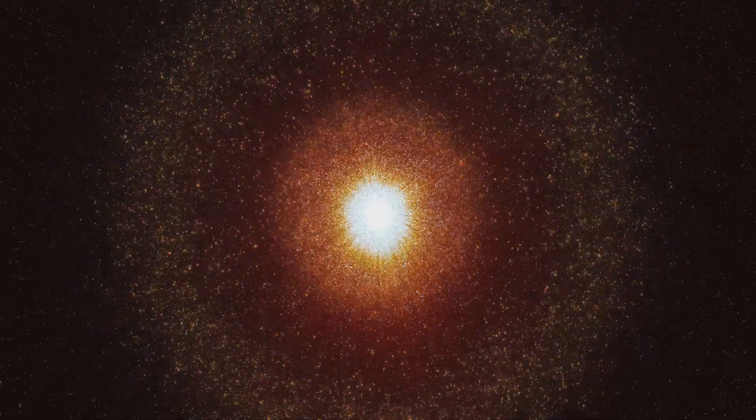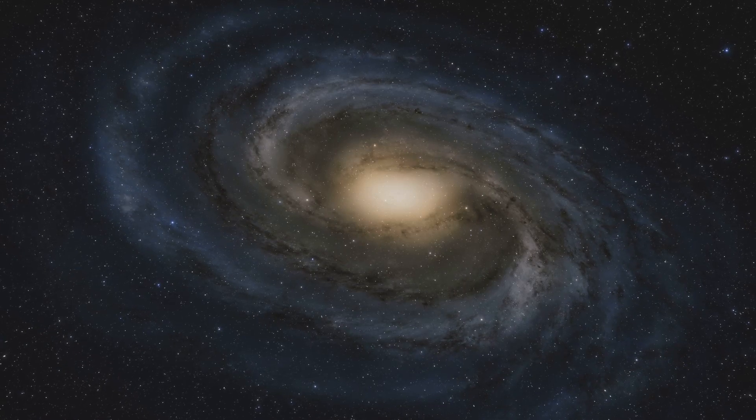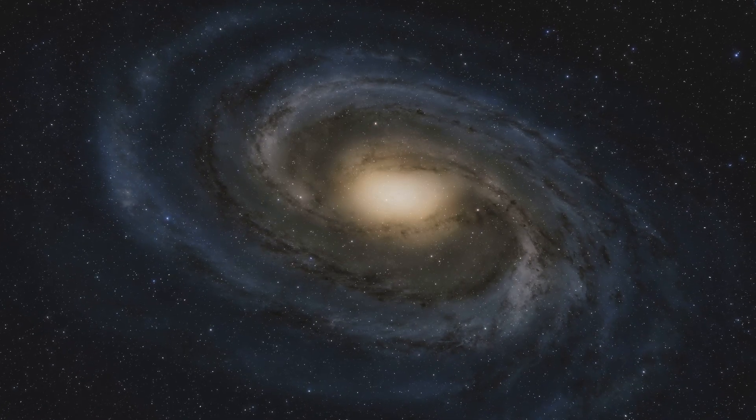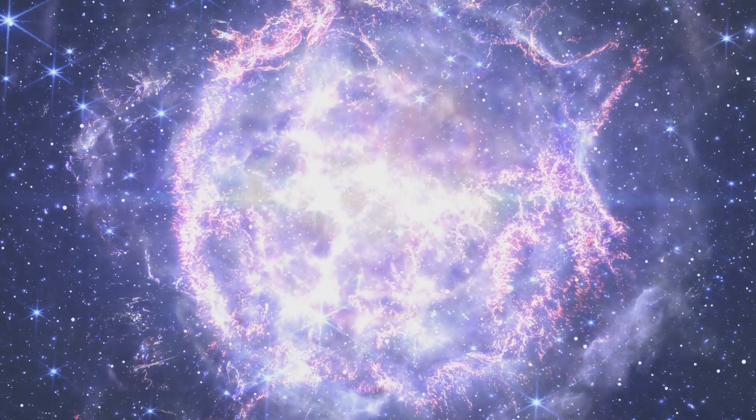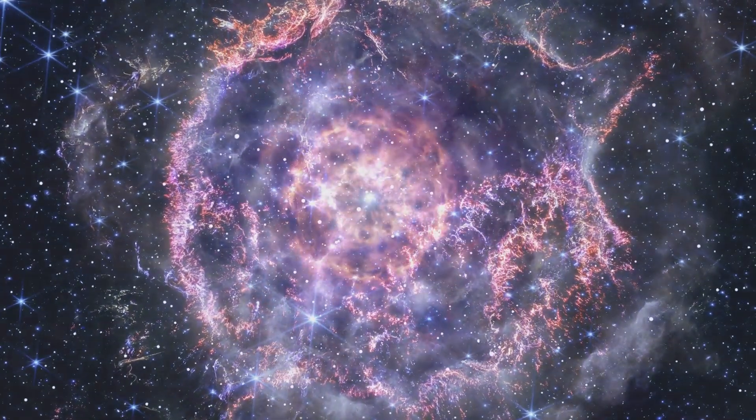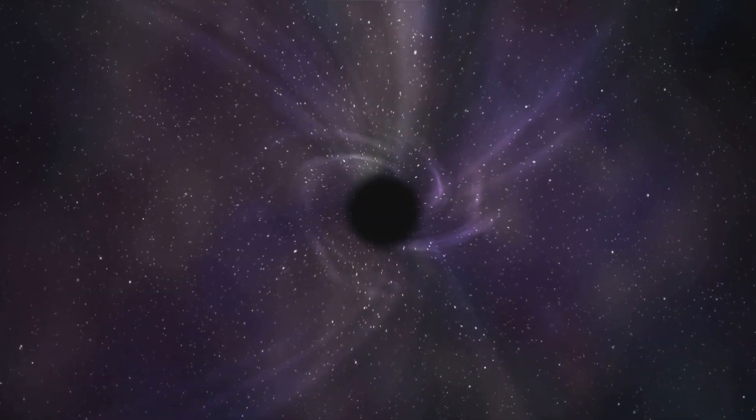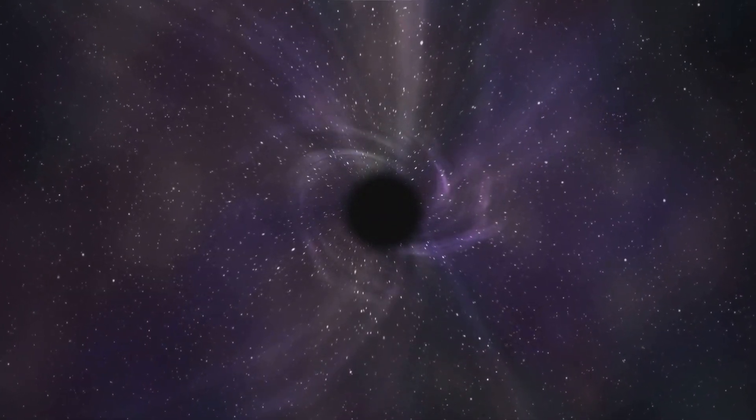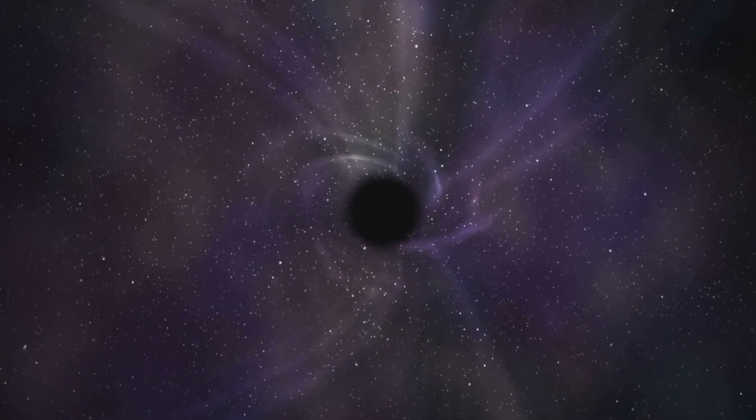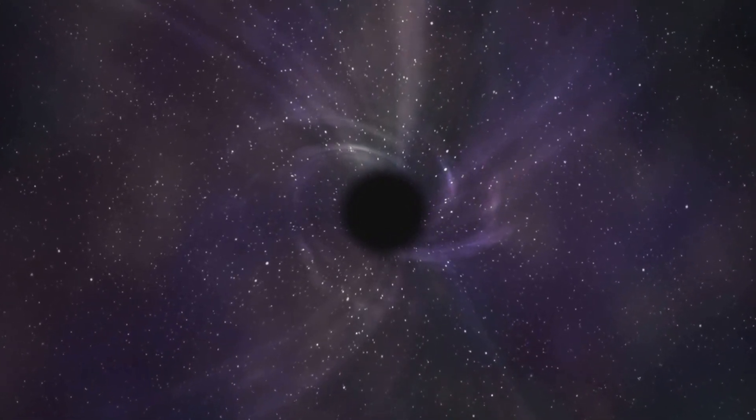Black holes are born from the death throes of massive stars. These stellar giants live fast and die young. As a star exhausts its fuel, it can no longer support its own weight. The core collapses in on itself, triggering a supernova explosion. The core compresses into an infinitely small and dense point called a singularity. This singularity lies at the heart of every black hole. The singularity's gravity warps the fabric of space-time around it.